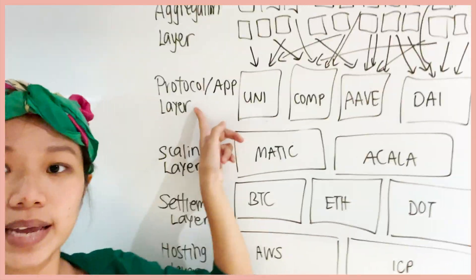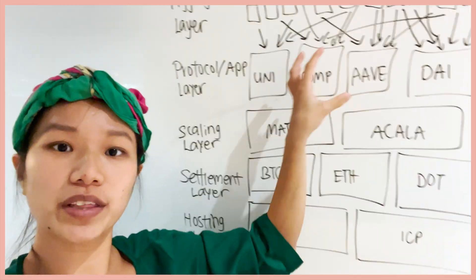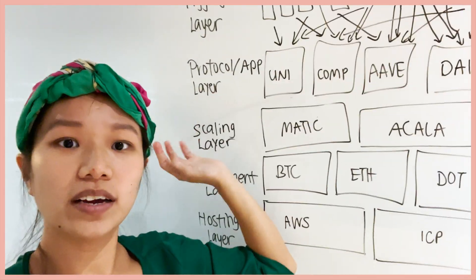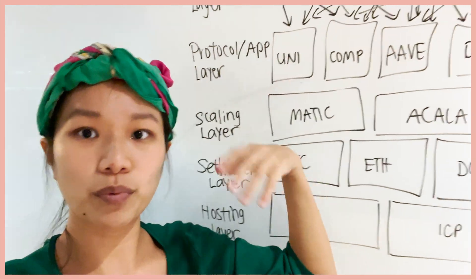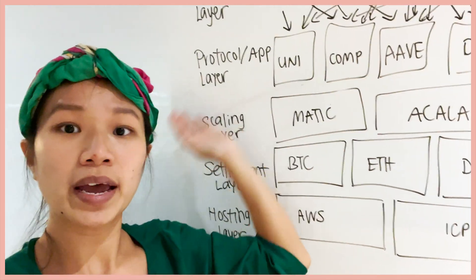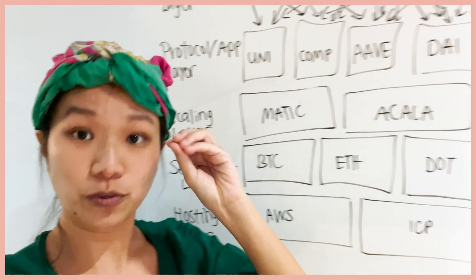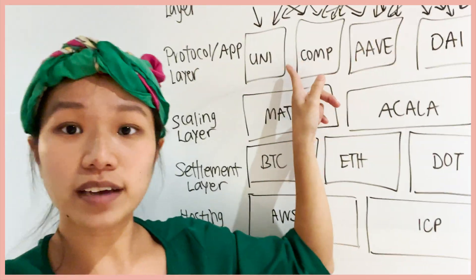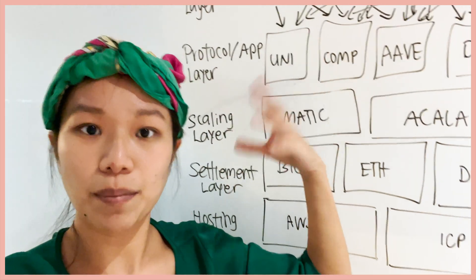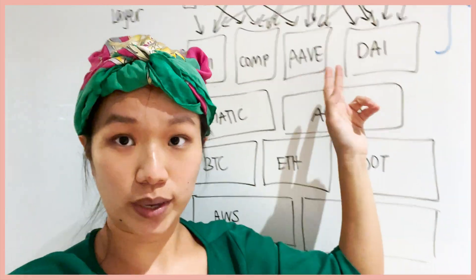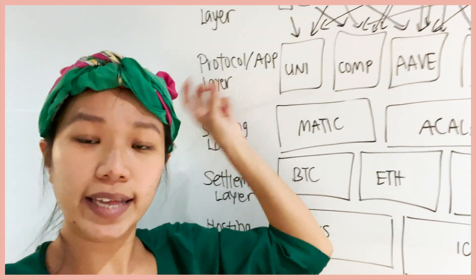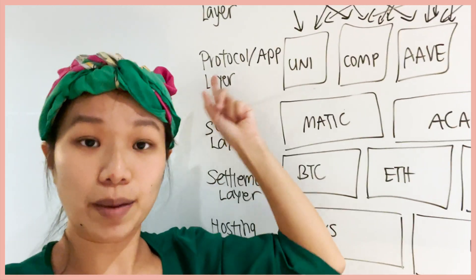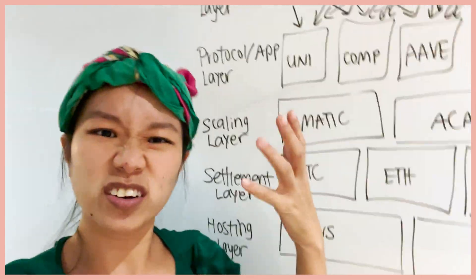Then we come to the application layer — the protocol layer. This layer is where you have specific things being built. For example, if you're looking at a chocolate cake, this protocol layer will be all the chocolate icing. So the protocol layer is really something specific. With Uniswap, that's for you to trade — it's basically the decentralized Nasdaq. Compound and Aave are basically your decentralized banks for lending and borrowing. And then you have Dai, which is your decentralized USD. These are very specific applications, and they're not run by a centralized authority. They're protocols — machines to execute these applications. That's why it's called the protocol layer, or the application layer.